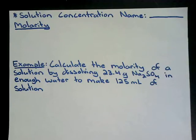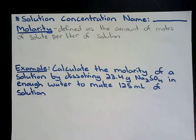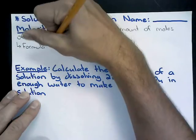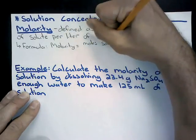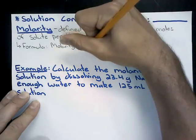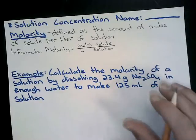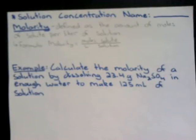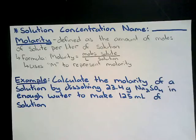Our first definition is molarity. Molarity is defined as the amount of moles of solute per liter of solution. The formula is: molarity equals moles of solute divided by liters of the total solution. We use the symbol capital M to represent molarity, and this is known as the molar concentration of a solution.